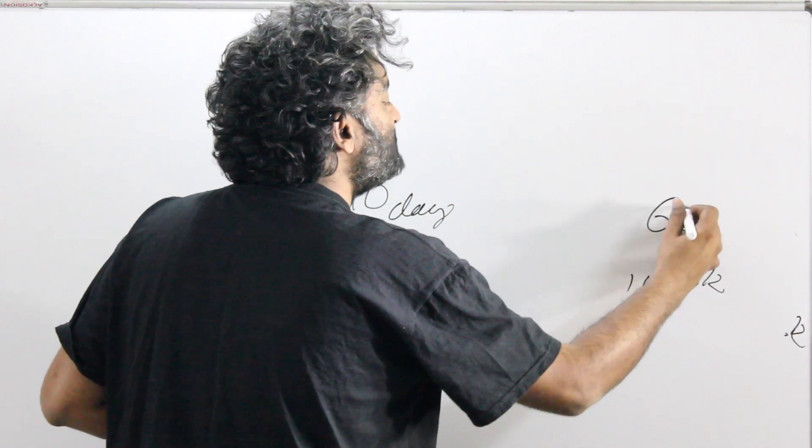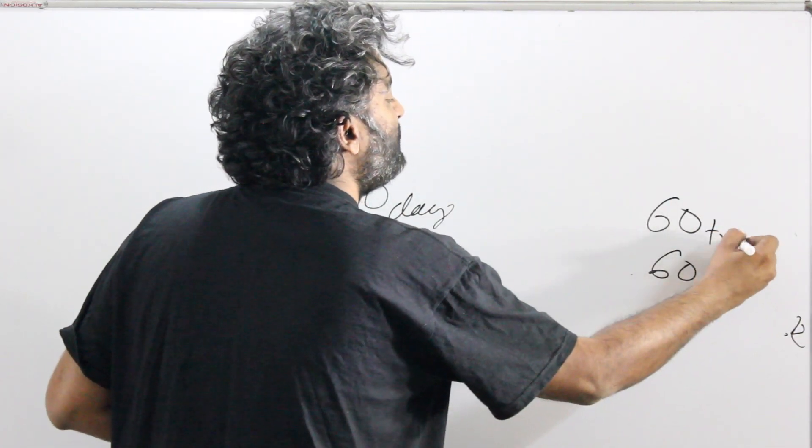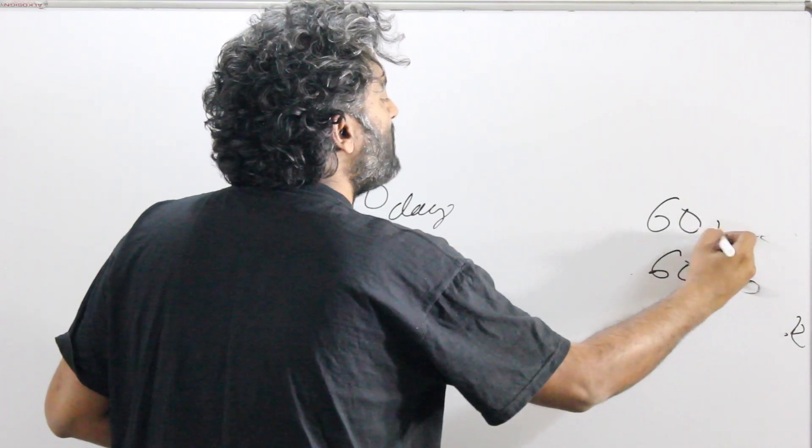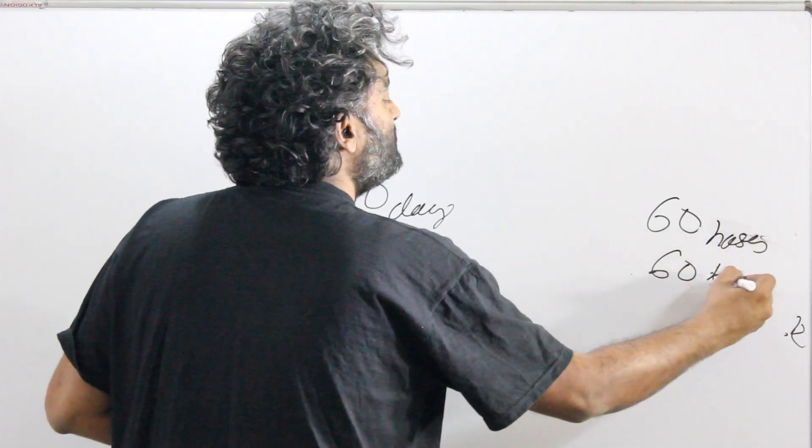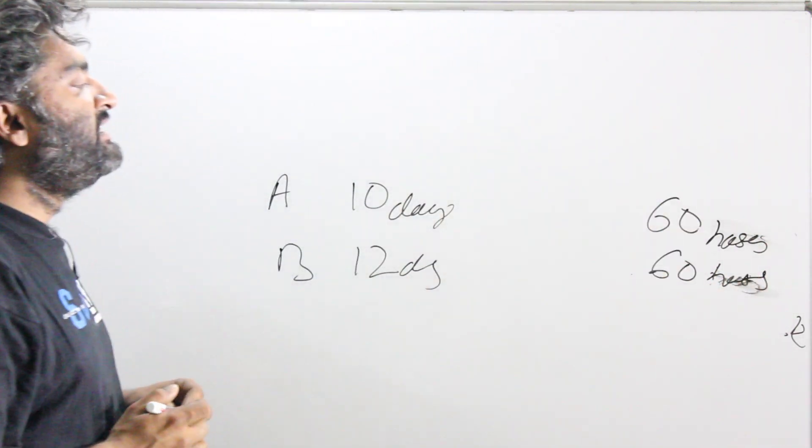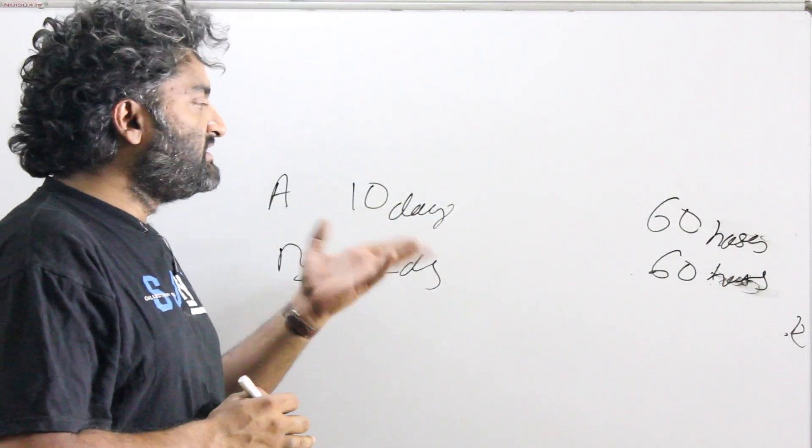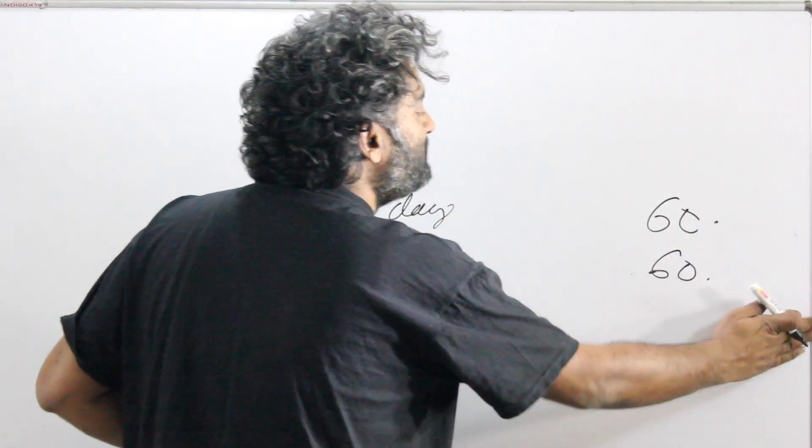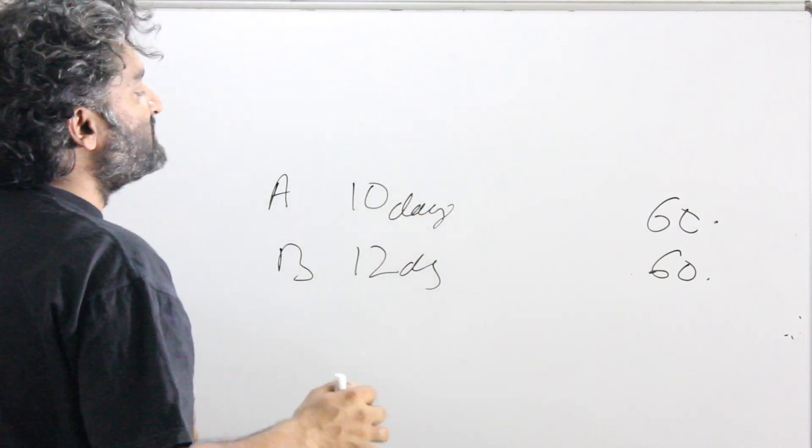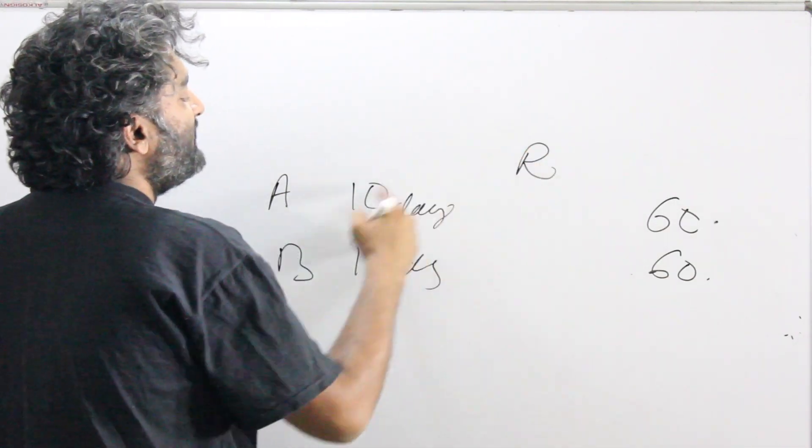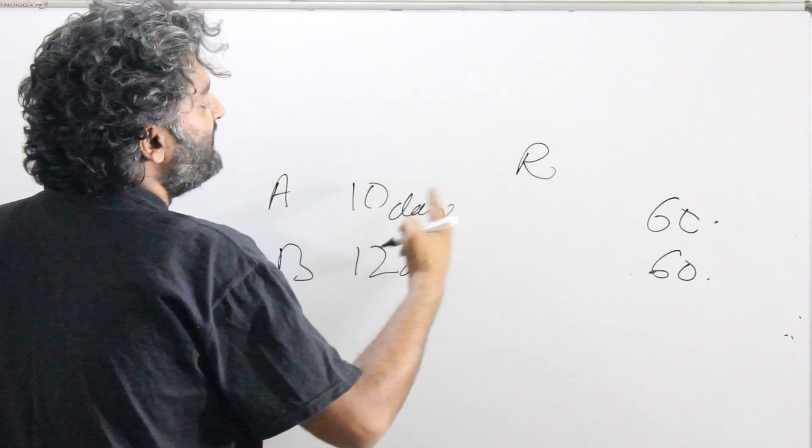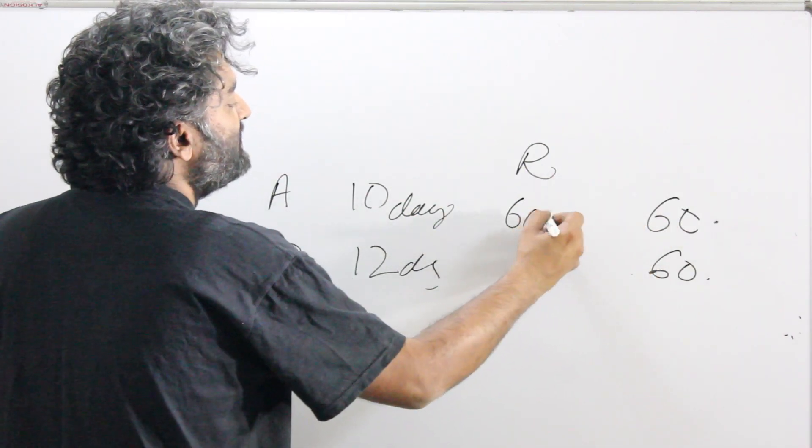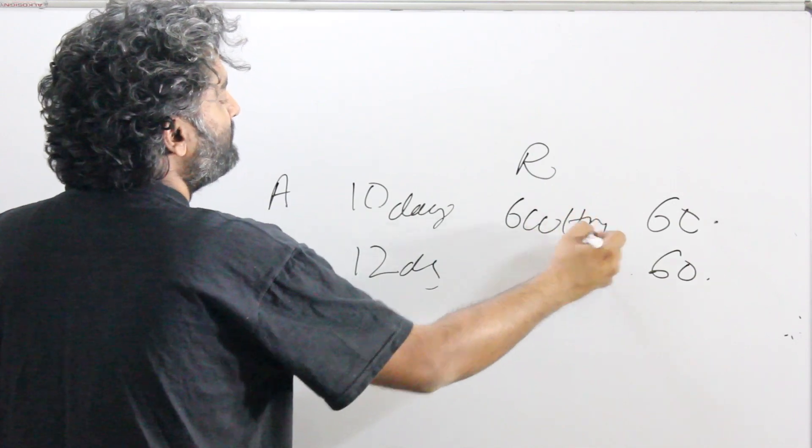Let's take 60 units of work. Let's say 60 trees were cut, or 60 houses were painted, or 60 times up and down somebody drove a vehicle. We are putting up a number. Let's say the work is 60 units. The rate of A now becomes fairly easy to understand. In 10 days, he cut 60 trees. So in 1 day, how many trees is he cutting? 6 trees.